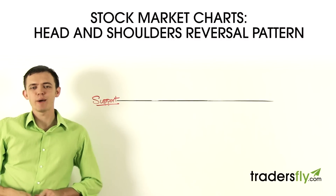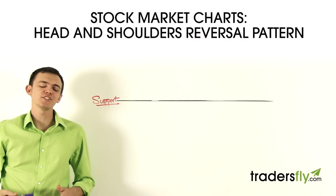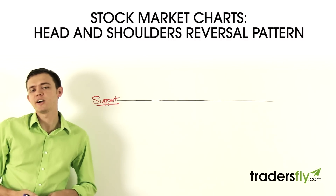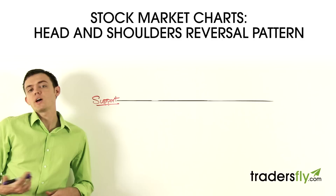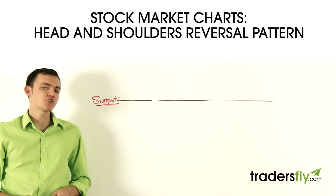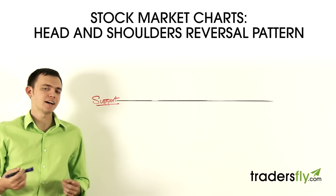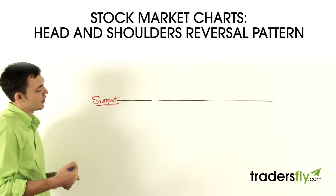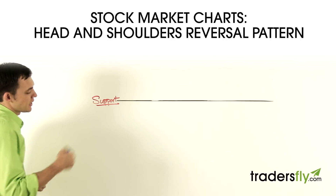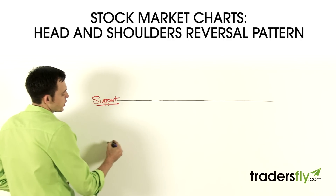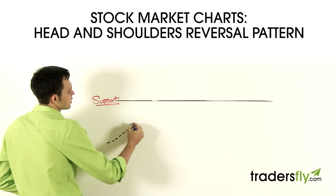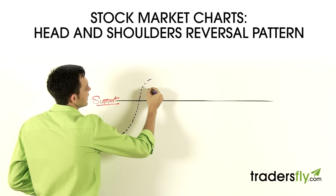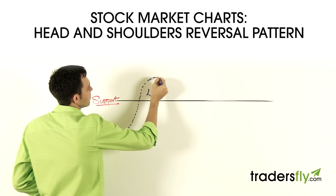Let's talk about the head and shoulders pattern. The head and shoulders is a reversal pattern, or a bearish pattern, so you want to make sure you have a prior uptrend. Head and shoulder patterns are very common. Because it's a reversal pattern, here's the uptrend we have — it starts going up, and here is our left shoulder that it makes.